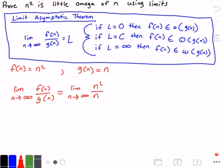Substituting in our values n squared and n for f(n) and g(n), this equals the limit as n approaches infinity of n, because n squared divided by n equals n.